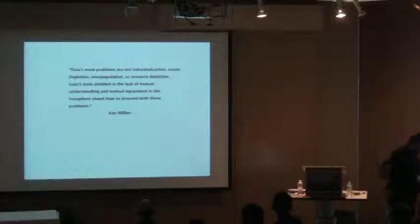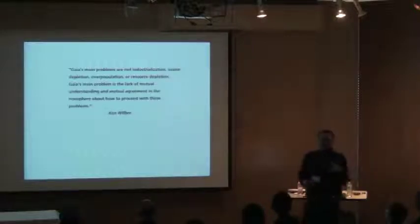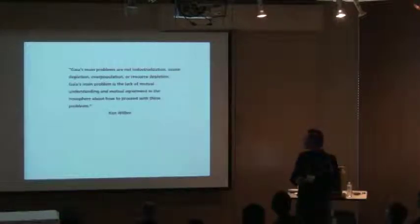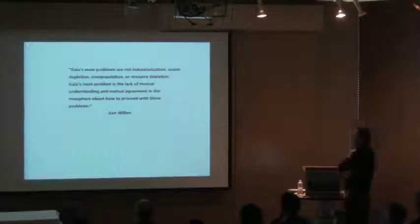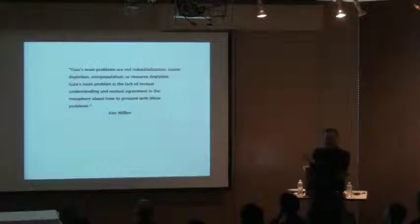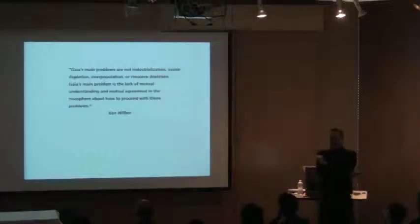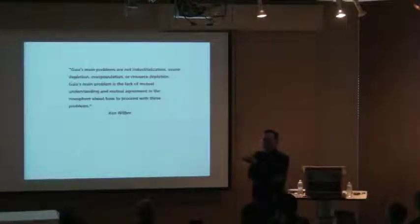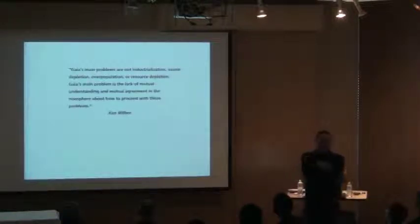Something else was going on. I couldn't quite figure out what it was. It seemed like there had to be another variable — another explanation for why it's so obvious and yet we're still sitting on our chairs. Here's what Wilber says: Gaia's main problems are not industrialization, ozone depletion, overpopulation, or resource depletion. Gaia's main problem is the lack of mutual understanding and mutual agreement in the noosphere about how to proceed with these problems. The noosphere is the realm of mind and knowledge — what makes humans different from other animals. The problem is us, our own consciousness, and our own inability to understand each other enough to agree on what we have to do.